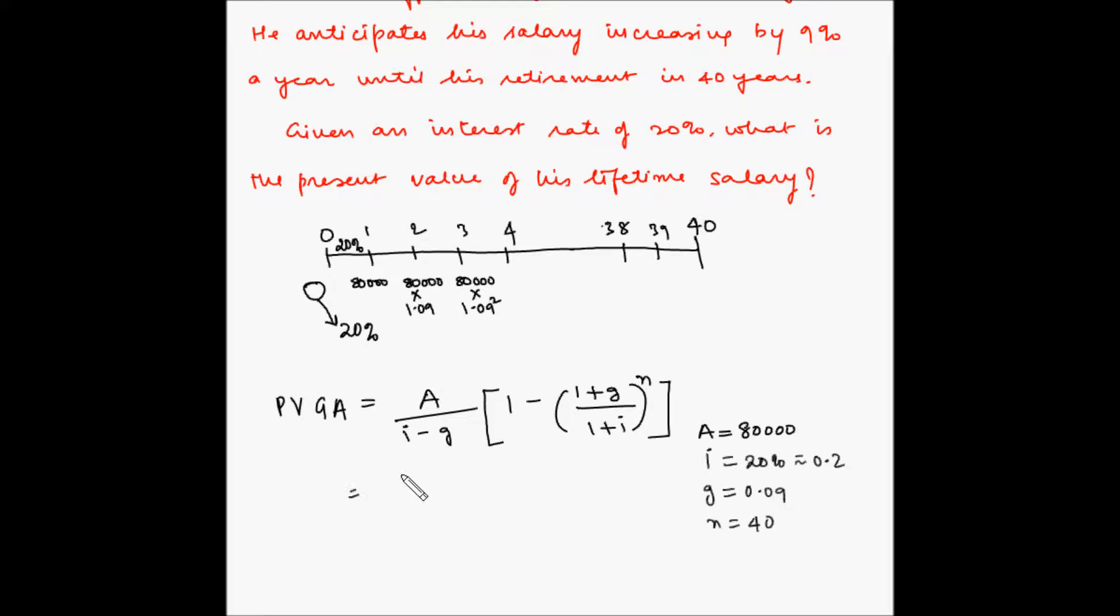So let us plug in these values: 80,000 divided by (0.2 minus 0.09), [1 minus (1 plus 0.09 divided by 1 plus 0.2) to the power 40]. So this is equal to 80,000 divided by 0.11, [1 minus (1.09 divided by 1.2) to the power 40].